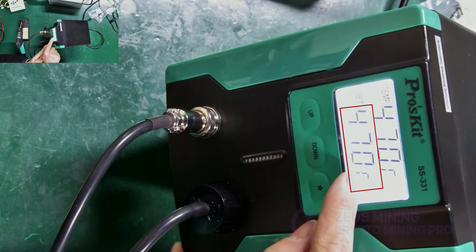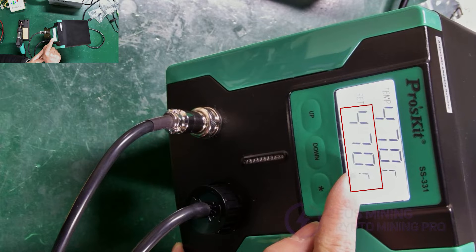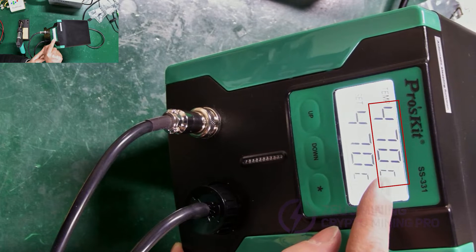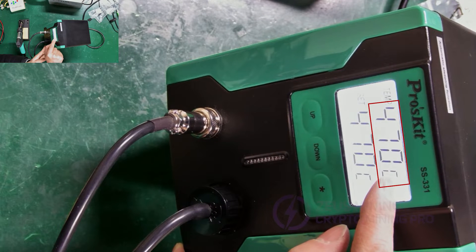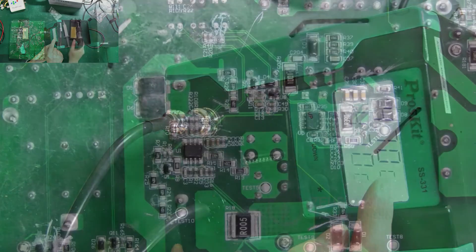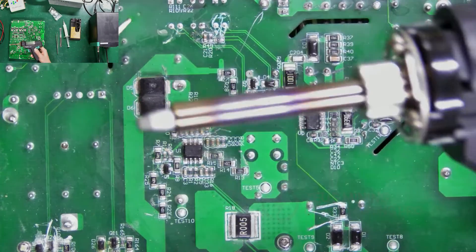On the screen, the lower row is the set temperature, and the upper row is the actual temperature of the desoldering gun. Now, I will demonstrate how to use it.